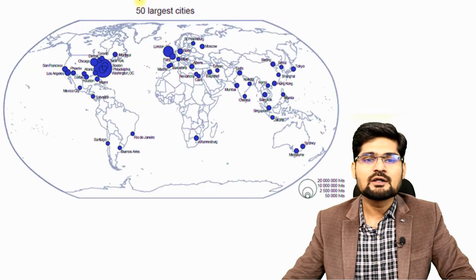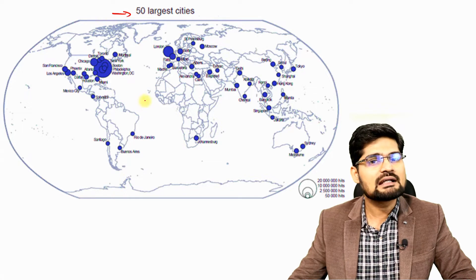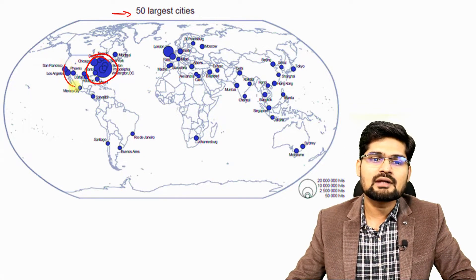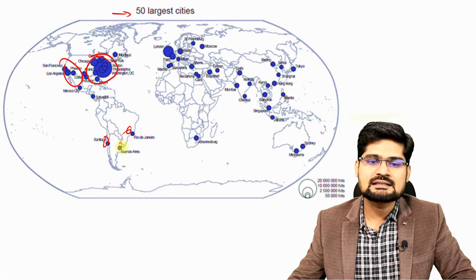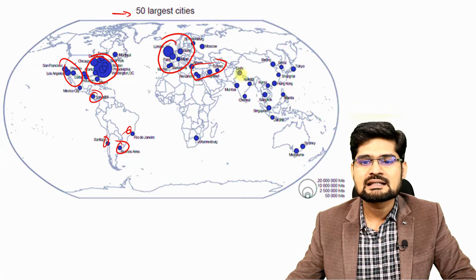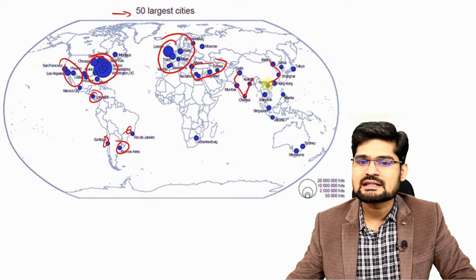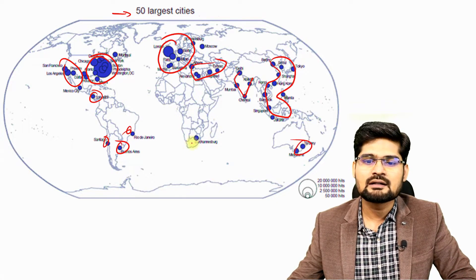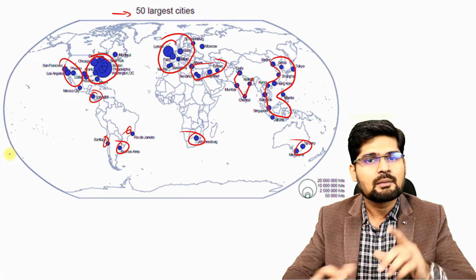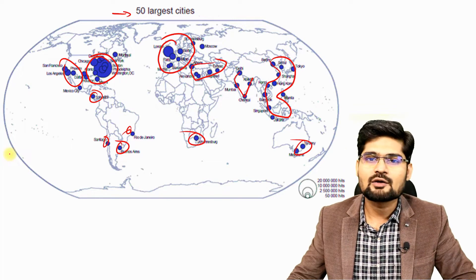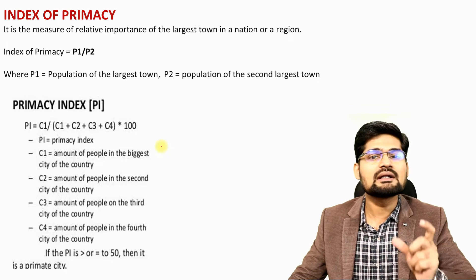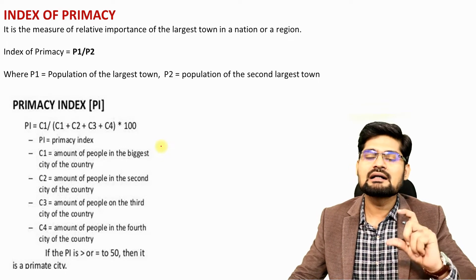Looking at the 50 largest cities of the world and where they are concentrated — in the United States, parts of South America, Mexico, Western Europe, the Middle East, India, Southeast Asia, Australia, and South Africa — these are the chunks of the world where the biggest cities are found. But are all of them under the concept of primacy? That's what we need to check using a quantitative technique.